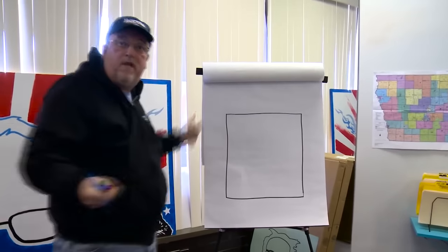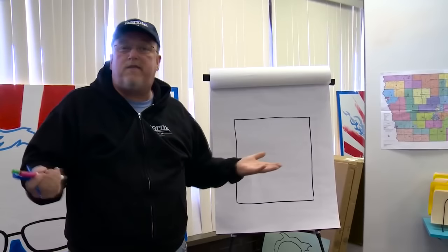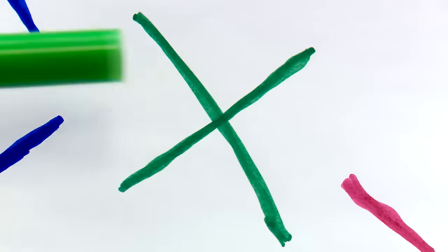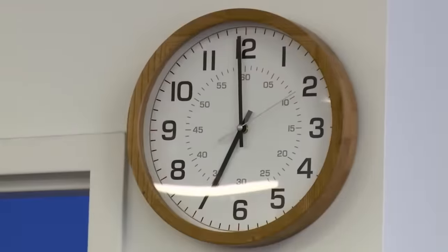A caucus room could be a library, a community center, your local school — it's anywhere people can move around. You're not just voting — you're caucusing. Each of these colors represents a Democratic candidate: there's candidate green, candidate pink, and blue for Bernie. The red group represents uncommitted voters who haven't picked a candidate yet.